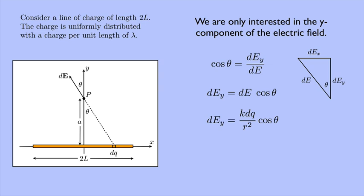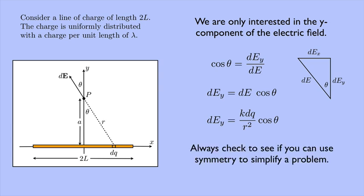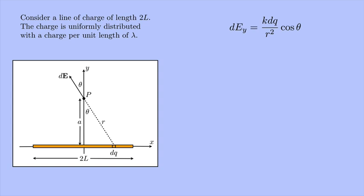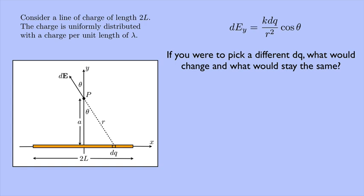And we should always check to see in these types of problems if you can use symmetry to simplify the problem. If you can use symmetry, it can save you a lot of work. Now we don't have to worry about the x component. Okay, so here's my expression for the y component. If I were to pick a different dq, like a different piece of charge somewhere on the line, what would change and what would stay the same?